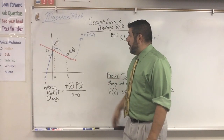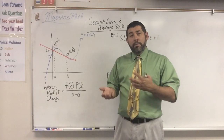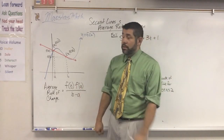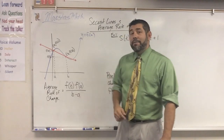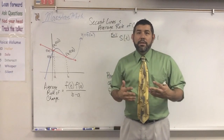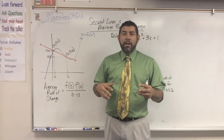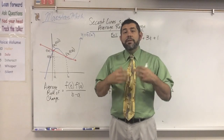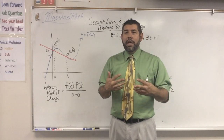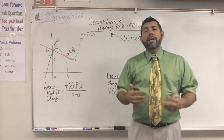The secant line can be found by finding the slope and then using the point-slope formula to find the equation of that secant line. Secant lines are special because they're used in calculus to start to look at rate of change — average rate of change — and then in calculus we go even further and look at something called instantaneous rate of change. But for now, we're going to look at average rate of change.